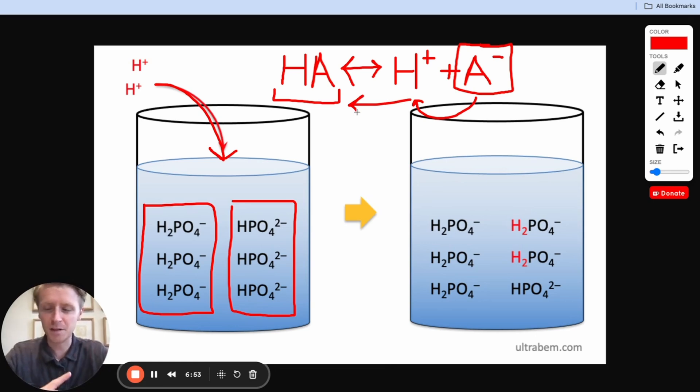The same thing could happen in the opposite sense. If we add some strong base all of a sudden, well, these weak acids are totally comfortable giving up their protons to react with the OH- and form water. So once again, that pH isn't going to change a ton. Now that we have an understanding of what a buffer solution is and how it works, let's go back to this problem and see what we can figure out.